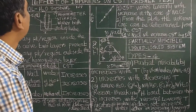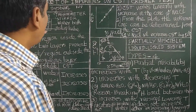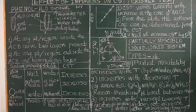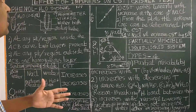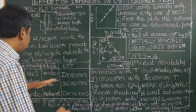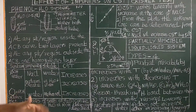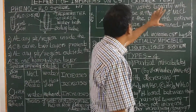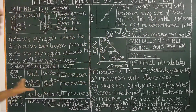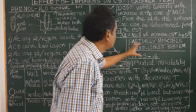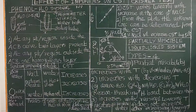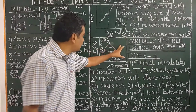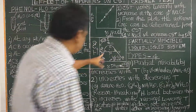Good morning. Today let us study about the effect of impurities on critical solution temperature — how traces of impurities present in water will affect the critical solution temperature. That is called the prisma test. We will describe the critical solution temperature curve and also see what are the different types of partially miscible liquid-liquid systems.